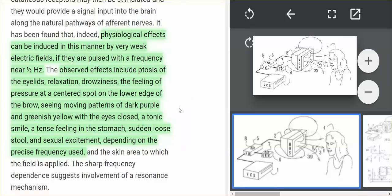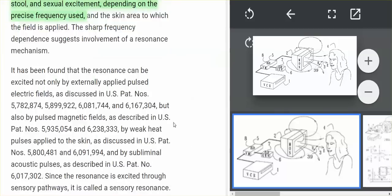Above effects include ptosis of the eyelids, which is a drooping of the eyelids. Observed, other observed effects: relaxation, drowsiness, the feeling of pressure at a centered spot on the lower edge of the brow, seeing moving patterns of dark purple and greenish yellow with the eyes closed, a tonic smile, a tense feeling in the stomach, sudden loose stool, sexual excitement depending on precise frequency used.